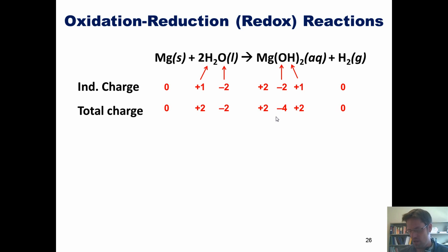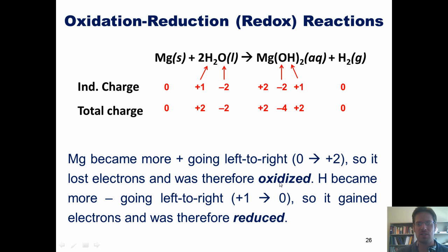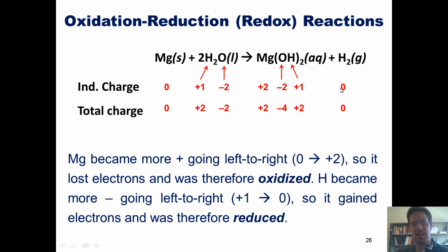Now we get to our question: who has been oxidized and who has been reduced in this process? Magnesium becomes more positive going from left to right — on the left side its oxidation state is zero, and on the right side it's plus two. Because it becomes more positive going left to right, it lost electrons and is therefore oxidized. Remember, LEO the lion says GRR — losing electrons is oxidation. Hydrogen, in contrast, became more negative going left to right. On the left side, hydrogen's oxidation state was plus one; on the right side it was zero — that is actually becoming more negative. That means hydrogen gained electrons in this process and therefore became reduced. Gaining electrons is reduction.